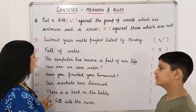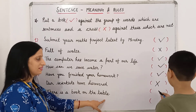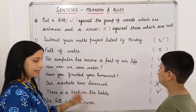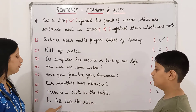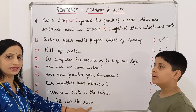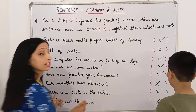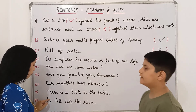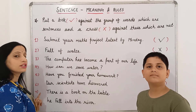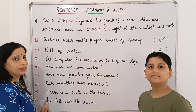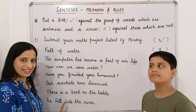The next one: 'Where is a book on the table?' Is it a sentence? Yes, so we will put a tick. And the last one is: 'he fell into the river.' Is it a sentence? No, it is not a sentence because the first letter of the first word 'he' is not in capital. Hence it will not be considered as a sentence.